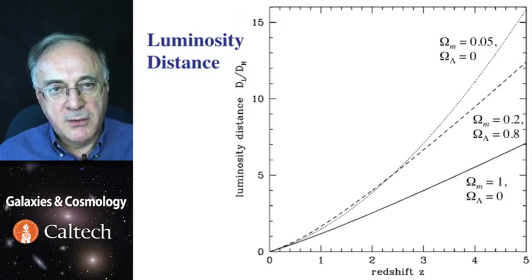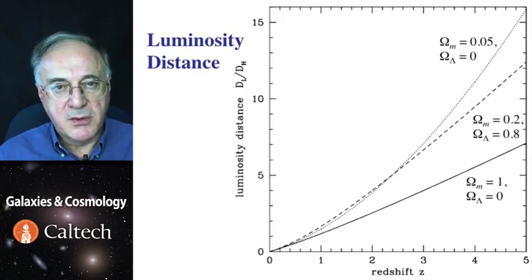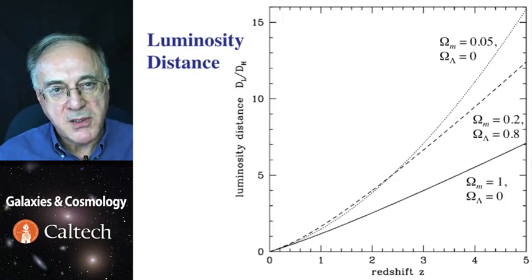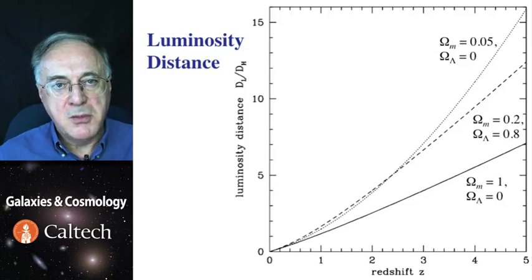So, here is a plot of luminosity distance in several cosmological models, again expressed in units of Hubble length as a function of redshift. You can see the typical redshifts of interest in modern cosmology. It's of the order of 10 Hubble lengths.